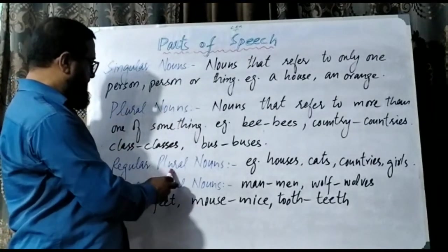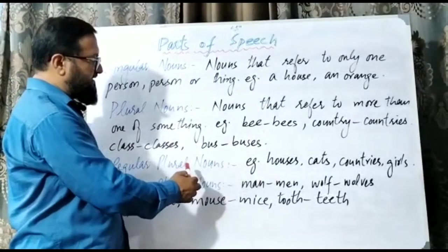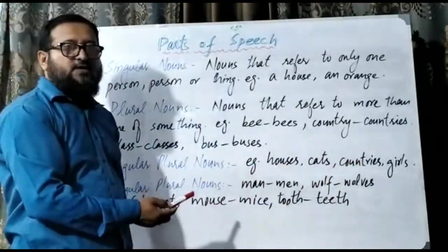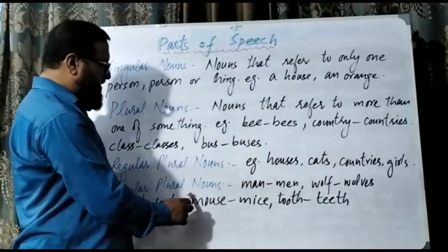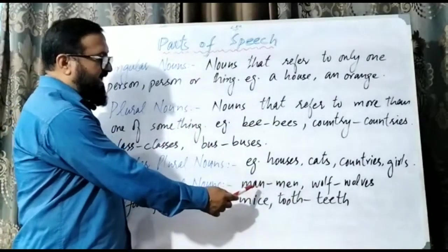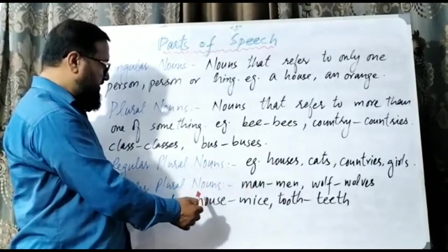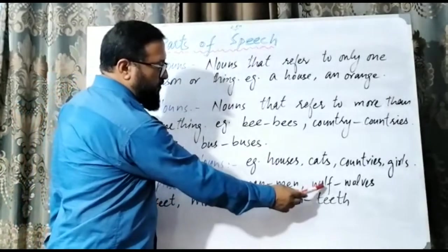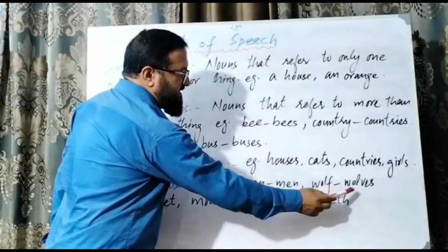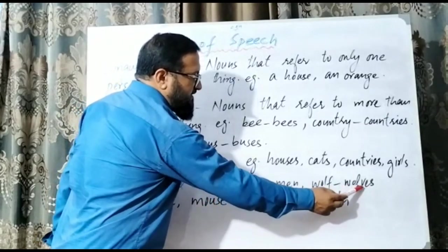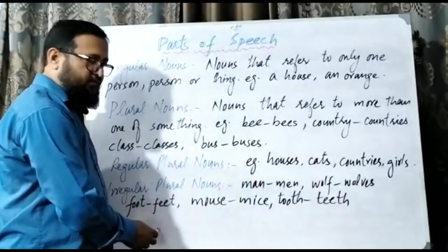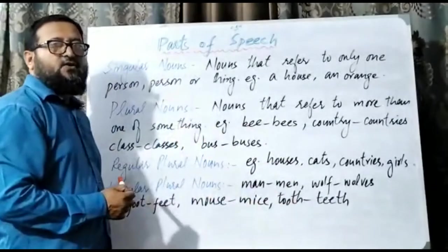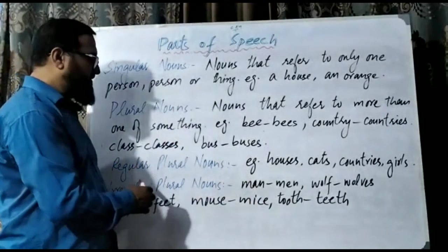Let's see regular plurals and irregular plurals. Regular plurals include: houses, cats, countries, girls — we simply add s. In irregular plural nouns, we do not simply add s. Instead the word changes: man becomes men, wolf becomes wolves, foot becomes feet, mouse becomes mice, tooth becomes teeth. This kind of noun in plural form is called an irregular plural noun.